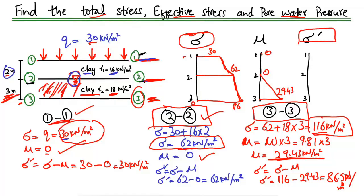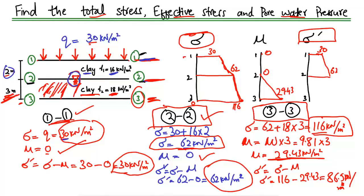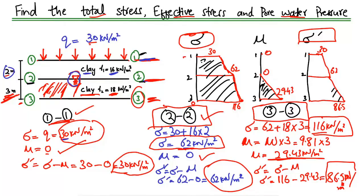For the effective stress diagram: at point 1.1 it is 30, at point 2.2 it is 62 — the same as total stress since pore water pressure is zero — and at point 3.3 it is 86.57 kilonewton per square meter. These are the different stress values at each point showing how total stress, pore water pressure, and effective stress change along the depth of the soil sample. I hope you understand how to draw these different stresses for a soil sample when you know the unit weight.